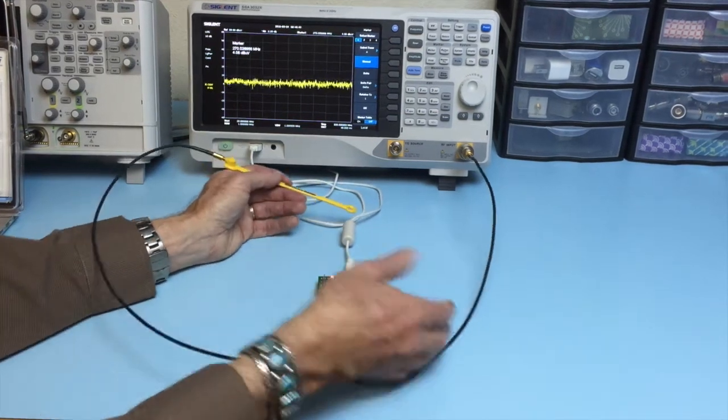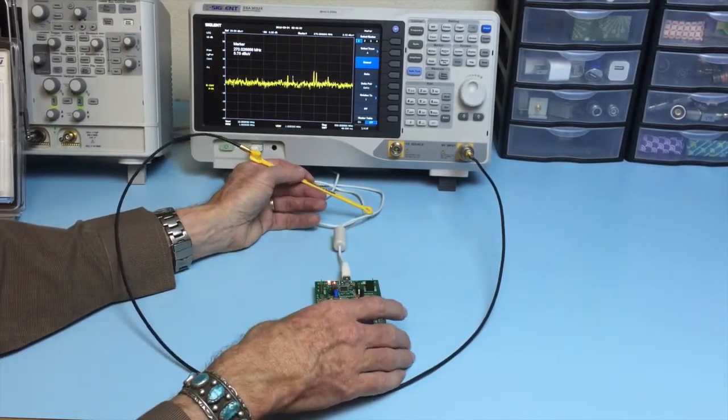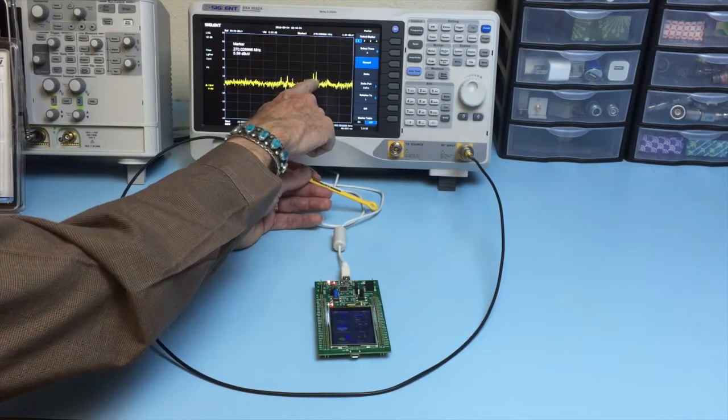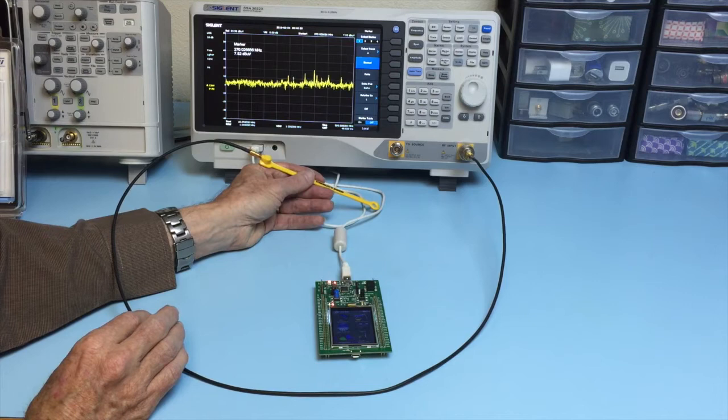And probing along this cable we don't really see very much activity so that's a good sign. We do see a couple harmonics here so that's something to take a look at and see if we can't reduce.